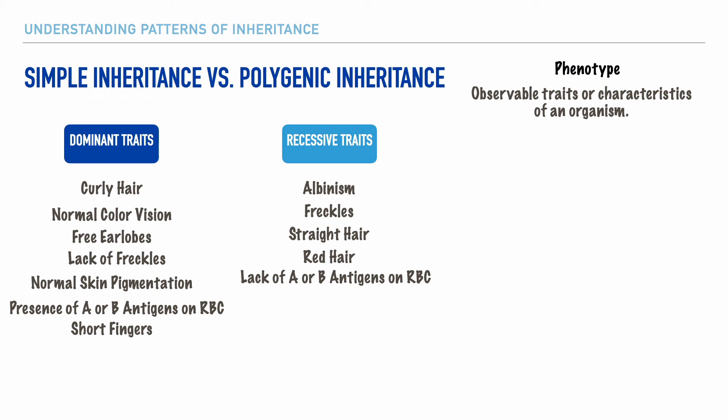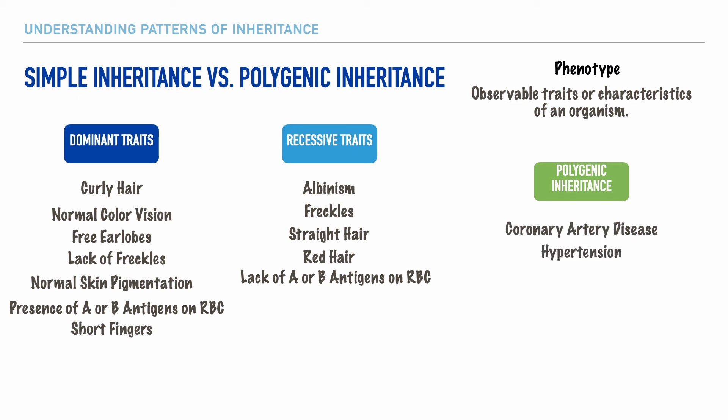There are some characteristics and conditions that are much more complex, known as polygenic inheritance. This term simply means that the expressed characteristics are caused by a number of genes. Through polygenic inheritance, it becomes increasingly difficult to make predictions about one's characteristics using a Punnett square. Conditions that fall within this category include coronary artery disease and hypertension. Although an individual might be at risk for developing one of these conditions, they can be suppressed depending upon the individual's lifestyle choices and or factors.